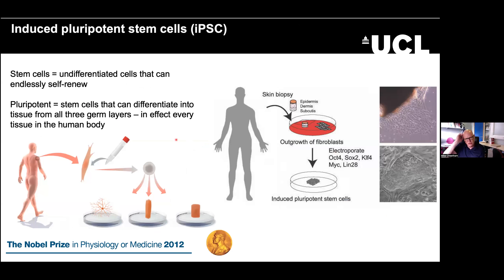It's back to 2006 when Shinya Yamanaka demonstrated that you could reprogram a somatic cell back to the pluripotent state, so that you could then differentiate it into, in effect, every tissue in the body. This caused an immense amount of excitement in terms of regenerative medicine, but also in terms of the potential for disease modeling, because what it enables us to do is take a patient cell, reprogram it to the pluripotent state by the introduction of these Yamanaka factors, and derive pluripotent stem cells that we can generate into virtually any tissue.